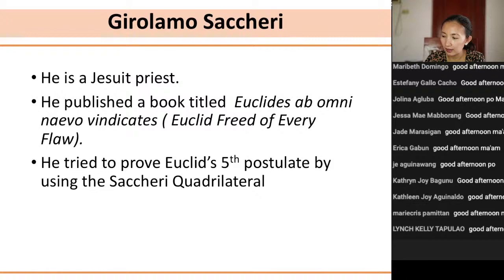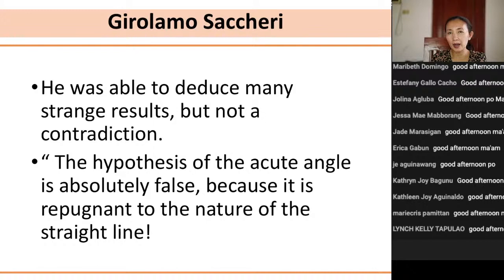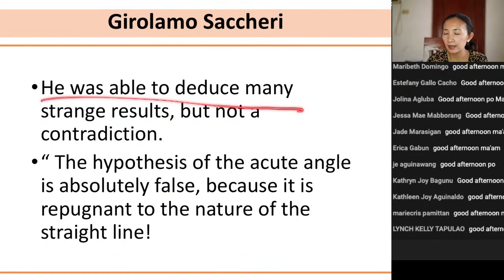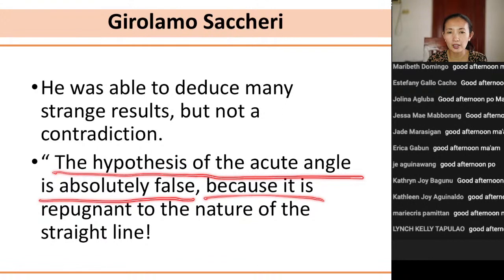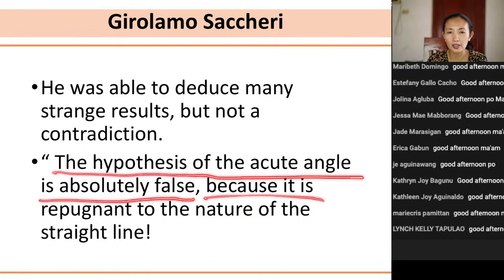Saccheri was able to deduce many strange results, but he was not able to arrive at a contradiction. By the way, he made use of indirect proof — proof by contradiction. He was able to deduce many strange results but not a contradiction. Out of dismay and frustration, he was able to say: 'The hypothesis of the acute angle is absolutely false because it is repugnant to the nature of the straight line.' And so he gave up. That was out of his frustration.